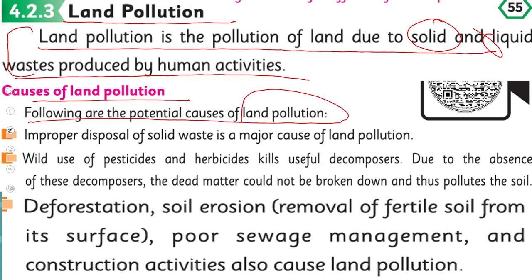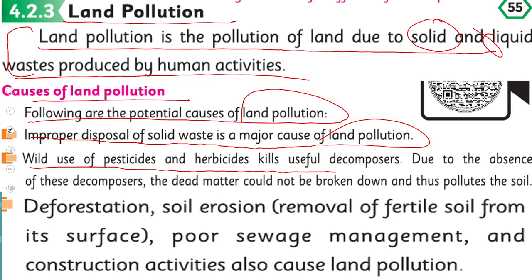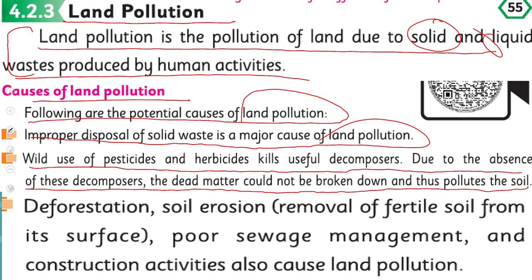Causes of land pollution: following are the potential causes of land pollution. Improper disposal of solid waste is a major cause of land pollution — jabke properly waste ko dispose of nahi kiya jata, it causes land pollution. Use of pesticides and herbicides kills useful decomposers. Due to the absence of these decomposers, dead matter could not be broken down and thus pollutes the soil.